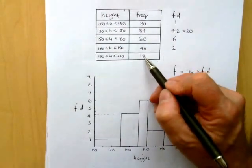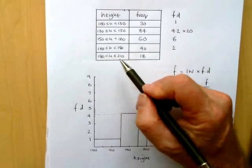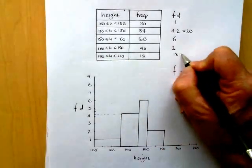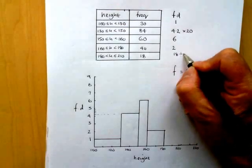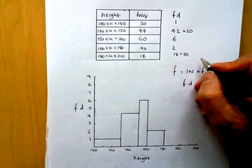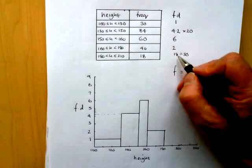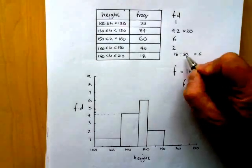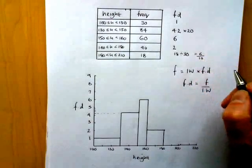Finally, I've got my 18 divided by a width of 30—18 divided by 30 for my frequency density. Now 18 over 30: 3 goes into 18 six times, and 3 goes into 30 ten times, so we've got 0.6.